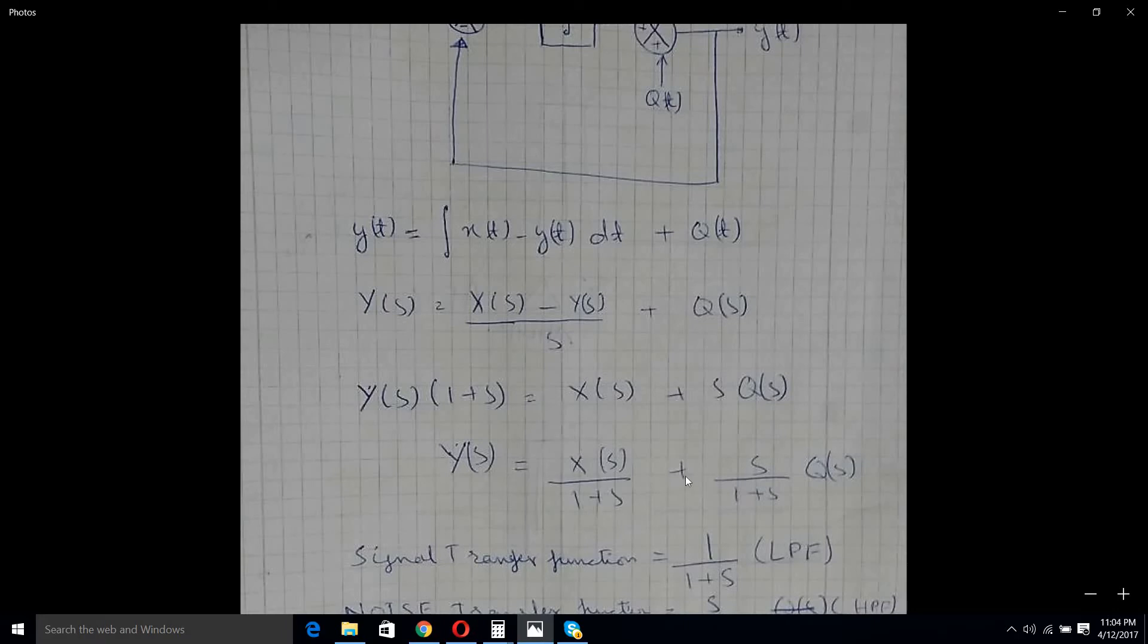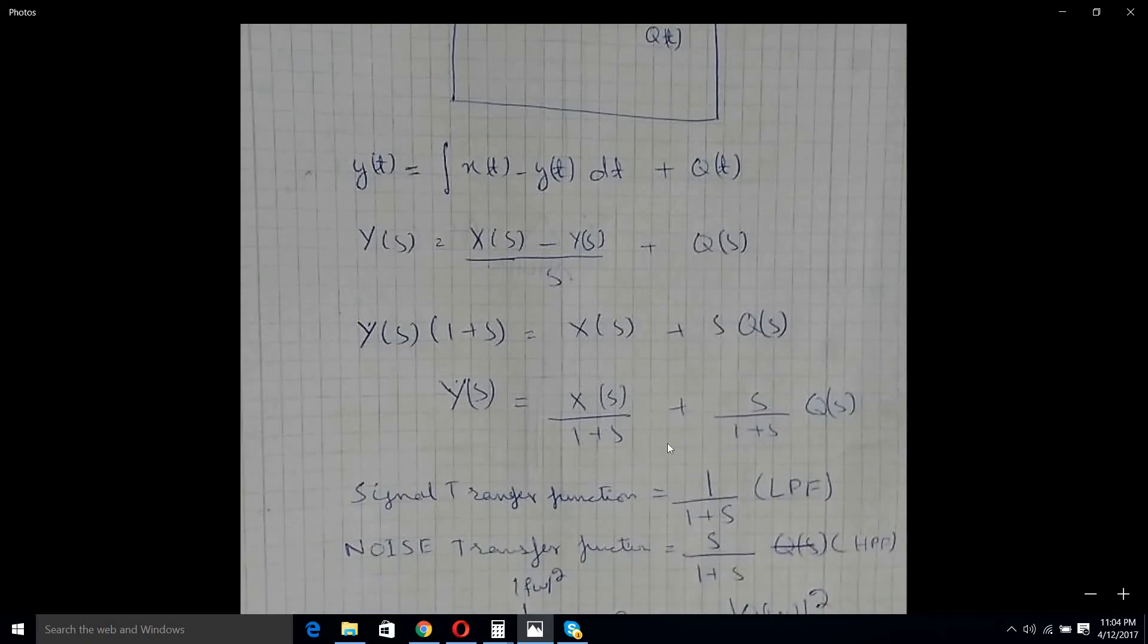Now there are two parts here: one of them is the signal while the other is the noise or the quantization noise. So we can derive two transfer functions here.